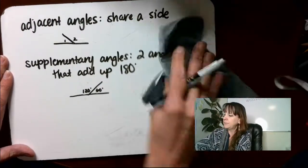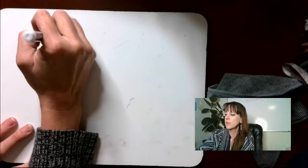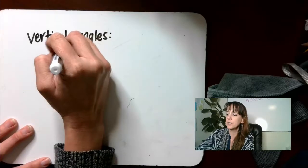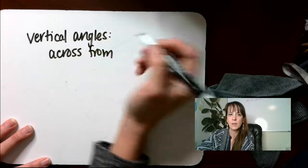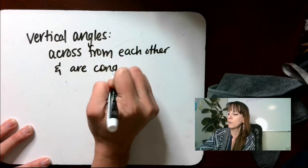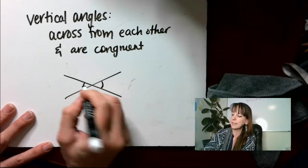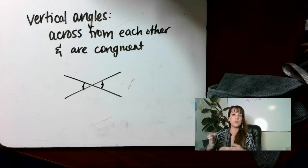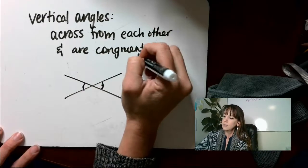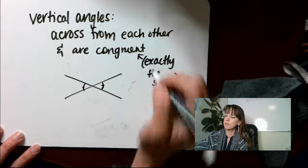The other term we have is vertical angles. Vertical angles are across from each other and are congruent. So vertical angles look like this — this angle and this angle are going to be exactly the same because they're vertical angles. You're forming an X shape. And congruent means exactly the same, so make sure you learn that one.